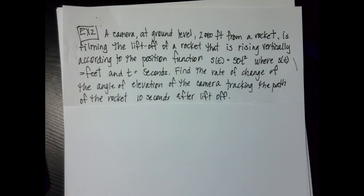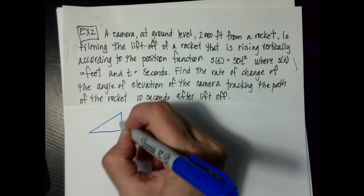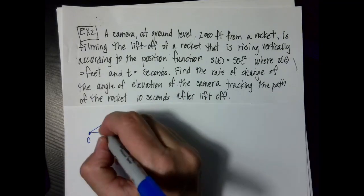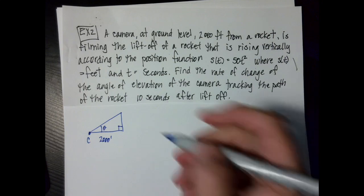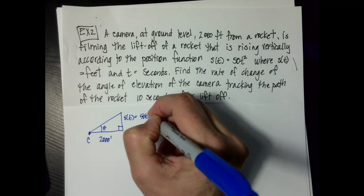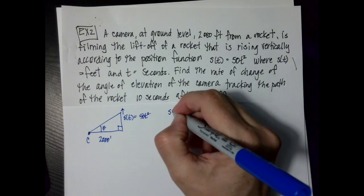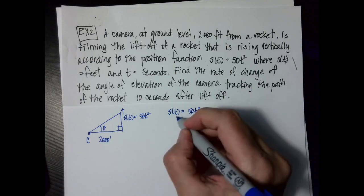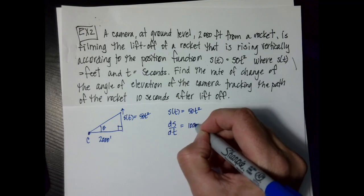So as we draw the diagram for this one, here's my triangle. We assume that the rocket's going straight up. My camera's going to be here. This is going to be theta. Here is my 2,000 feet, so I'm safe distance from the rocket. And my rocket's position function is 50 t squared. So the rocket is going that way. I'm going to write down my information. I know s(t) is 50 t squared.